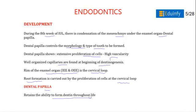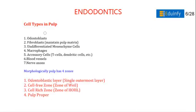The cell types in the pulp are: odontoblasts, fibroblasts, undifferentiated mesenchymal cells, macrophages, accessory cells like T cells and dendritic cells, blood vessels, and nerve axons. Morphologically, the pulp has four zones: the odontoblastic layer (single outermost layer), the cell-free zone, the cell-rich zone, and the pulp proper.